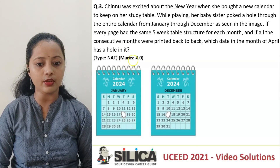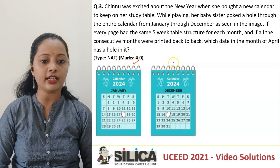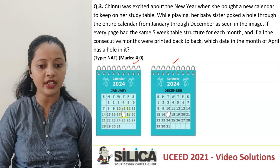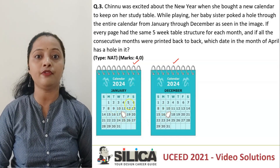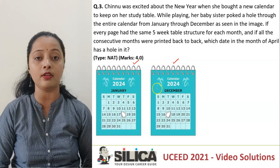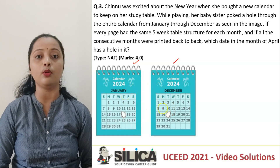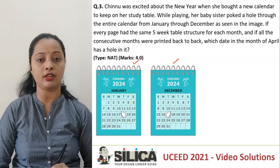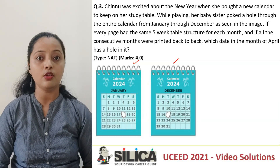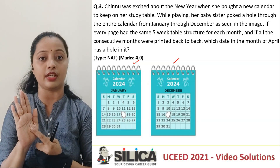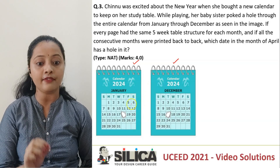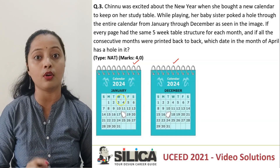They have given two views of the calendar as in the image. Chinoo's sister has poked a hole through it and we need to find in the month of April which date is going to have a hole on it. First, what you need to check is these calendars are printed back to back. So if this side is January, February will be on the back side. Accordingly, we'll have to find which side April falls on.